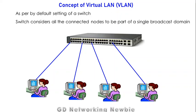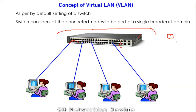By default settings of a switch, the switch considers all connected nodes to be part of a single broadcast domain. This switch, by default, considers all nodes connected using its ports to belong to one broadcast domain. So by default, a switch can only create a single local area network, because it places all connected nodes within a single broadcast domain.